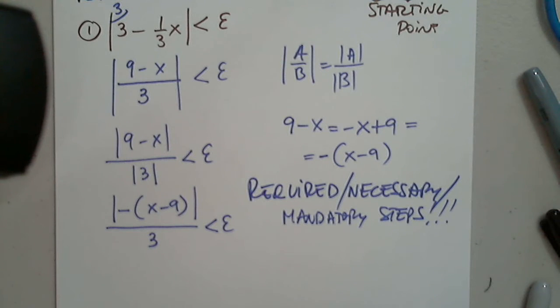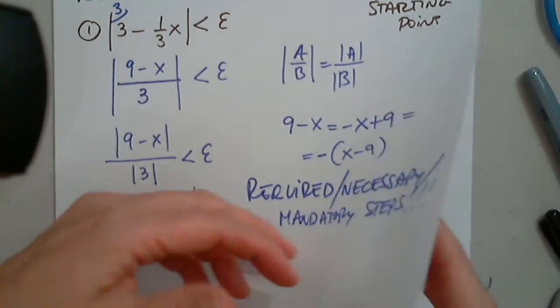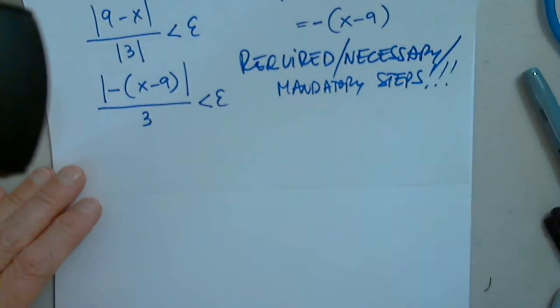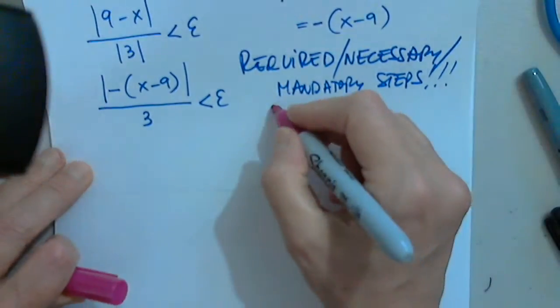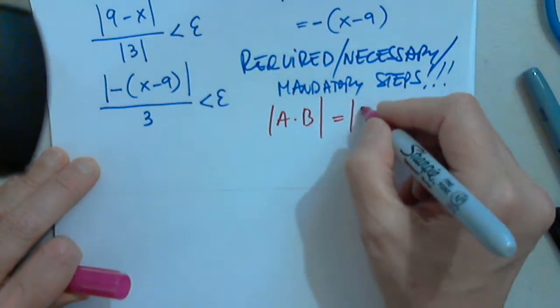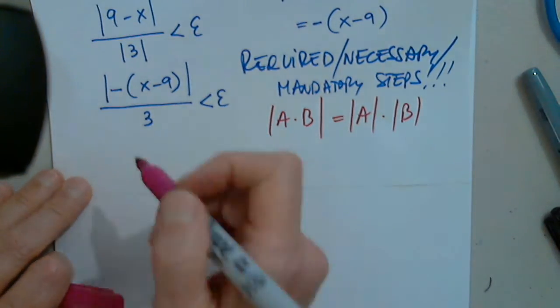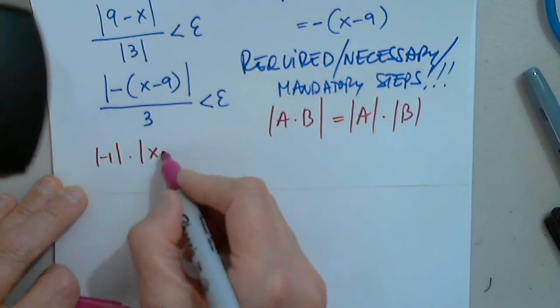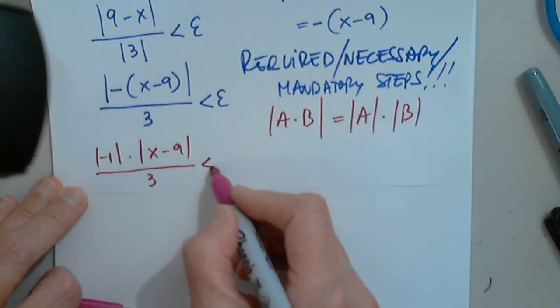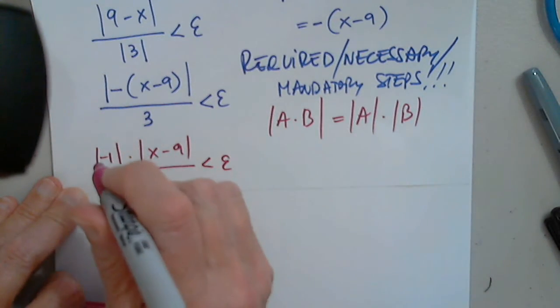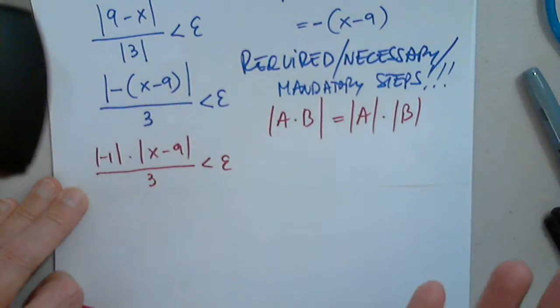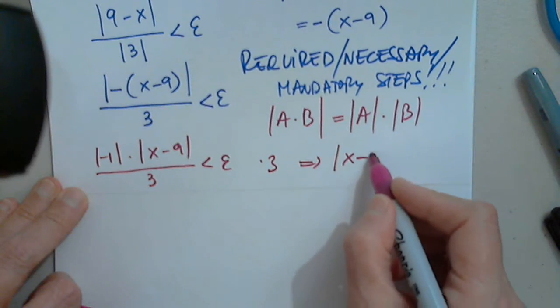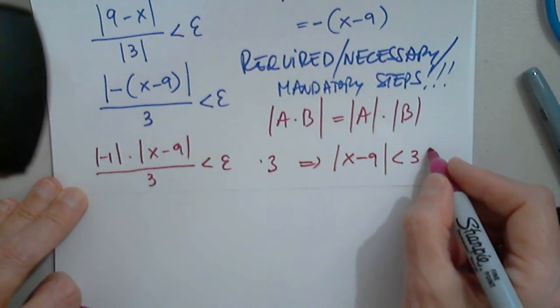The next step is mandatory as well. The next step says this: the absolute value of a times b, which we discussed last time. So now I have the absolute value of negative one times the absolute value of x minus nine divided by three less than epsilon. Now I will show that this is one, and by not writing anything and multiplying by three, so from here I have the absolute value of x minus nine is less than three epsilon.